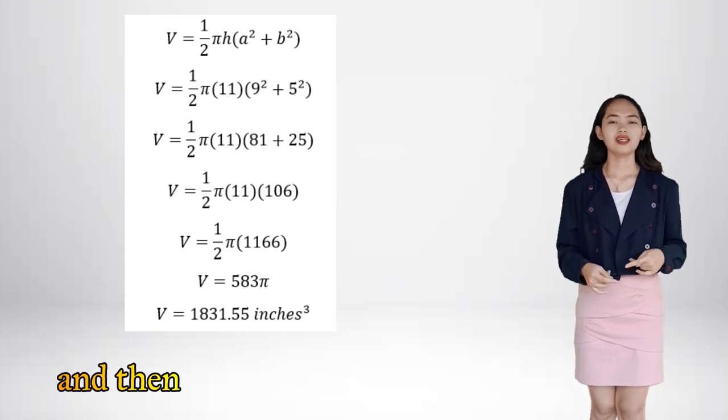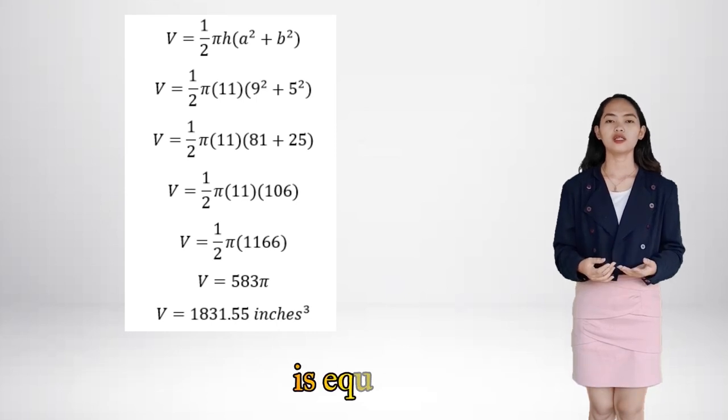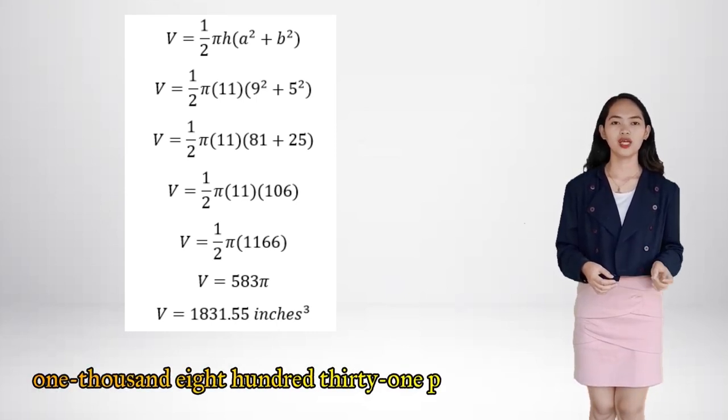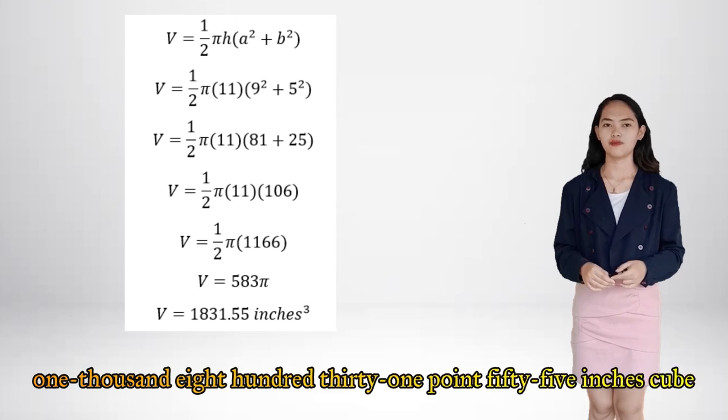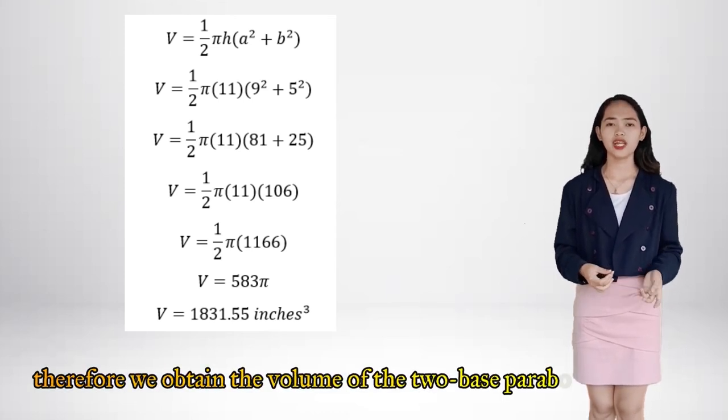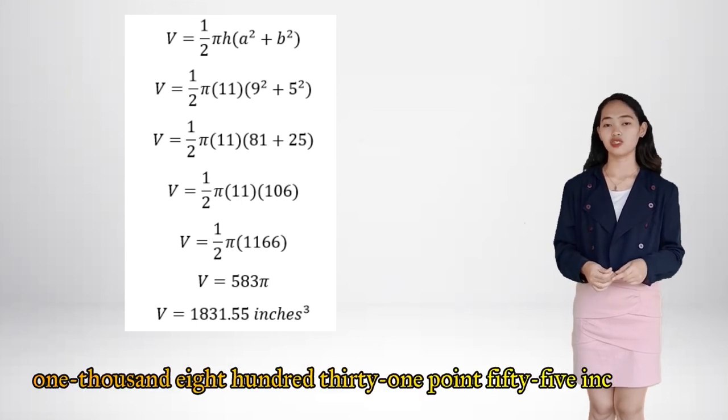And then 583 times pi equals 1,831.55 inches cubed. Therefore, we obtain the volume of the two-base paraboloid, which is 1,831.55 inches cubed.